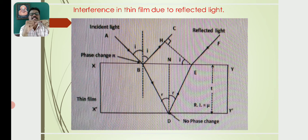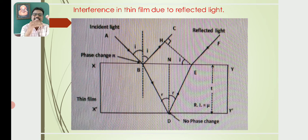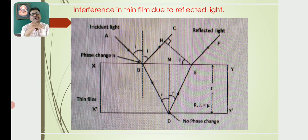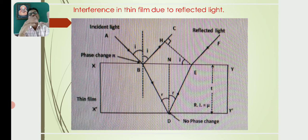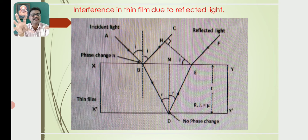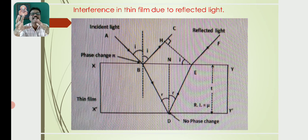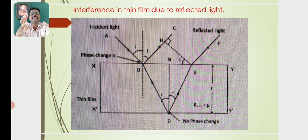BC and EF are coherent waves — they have the same wavelength, same frequency, and a constant phase difference. If they are made to pass through a condensing lens, the refracted rays are incident on a screen and form alternating bright and dark fringes. This interference pattern is known as interference in a thin film due to the reflected method.